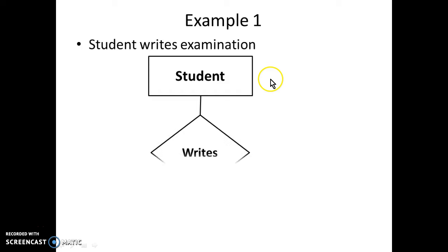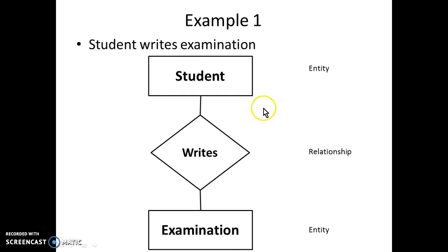Student writes examination where student and examination are entities which are nouns, write as a relationship, this is a verb. Student writes examination. We can draw diagrams corresponding to statements either in a top to bottom manner or from left to right manner. That is the way how we read the diagram. Now, we can see these nouns as becoming the entities.